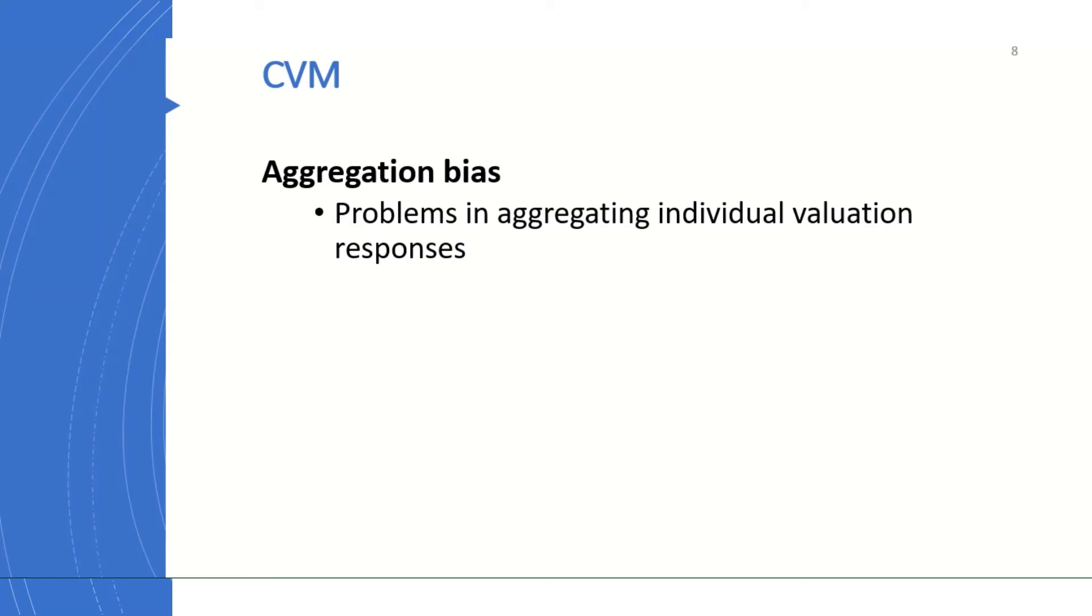So in contingent valuation method, generalizing to the population based on the result from sample might be biased, what is called aggregation bias, because of the following reasons: maybe the sample is not randomly selected, which is called sampling error, or the sample size might not be sufficient.